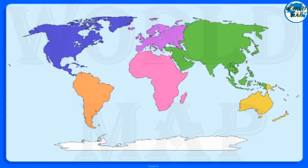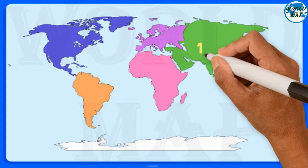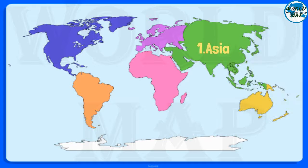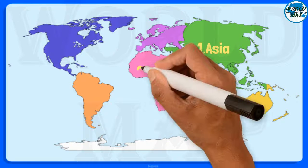Number 1: Asia. It is the largest continent in the world both in terms of area and population. It comprises 48 nations and 60% of the world's population.